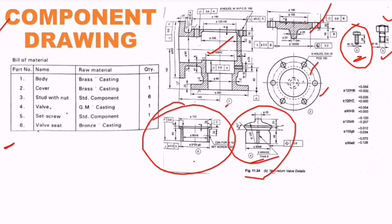So we have divided the complete figure into six individual parts: body, cover, stud with nut, valve, set screw, and valve seat. After dividing into individual parts, an important thing is that we must maintain the given dimensions exactly as in the question.